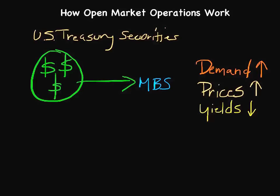Yields are what investors receive if they purchase a particular security. Where this is important is that a lot of financial instruments are tied to these yields. Long-term securities and mortgage-backed securities — if the yields go down, those are tied directly to what we pay for our mortgages. So mortgage rates will usually go down, thus lowering borrowing costs.